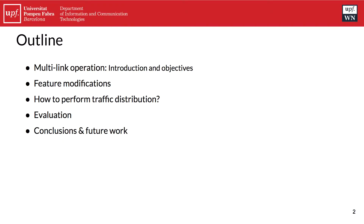Let me do a brief outline of the presentation. I'm going to start by talking about multi-link operation, introducing this new feature, then point to its main objectives, refer to the main modifications proposed to accommodate such features on the standard, introduce the traffic allocation problem we tackled in the article, and finally present the results and conclusions and future work.